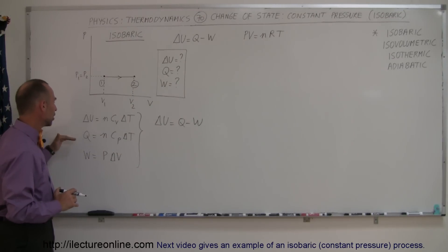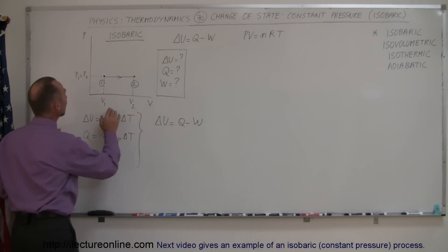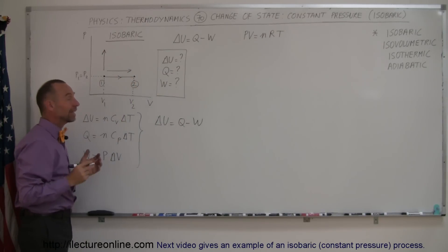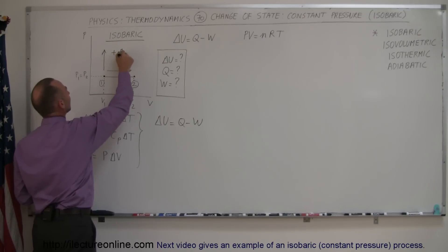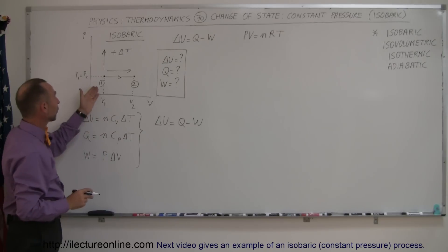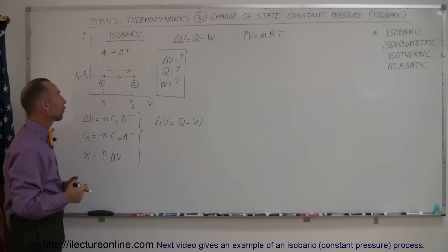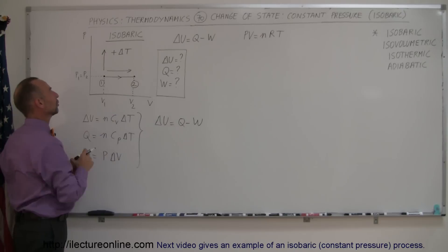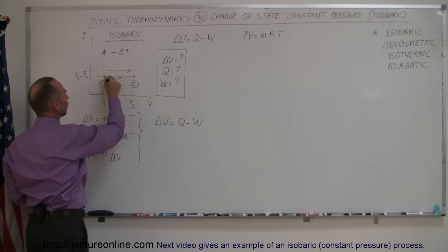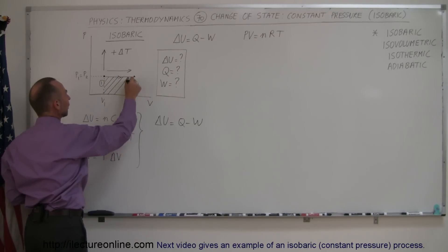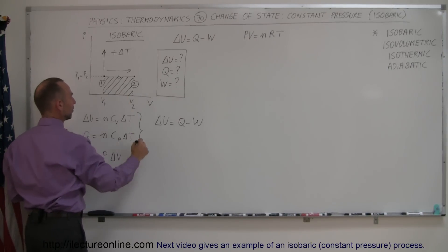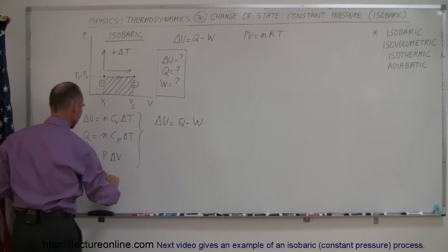So we have the internal energy change, the heat added or taken away, and the work done by the gas. You can also look at where you started and where you ended up on a PV diagram. If you go to the right or upward, the temperature will always increase — this indicates a positive ΔT. So when we went from state 1 to 2 and the volume increased, the temperature also increased. If you go from right to left or top to bottom, the temperature decreases. In addition, we can find the work done by figuring out the area under the curve that represents the change in state — work done equals the area under the curve.